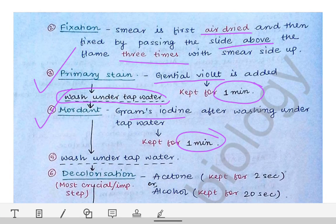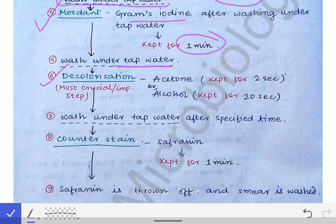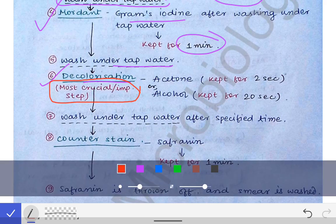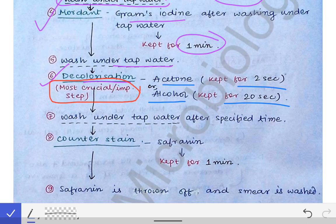After keeping the Gram's iodine for one minute, we wash it again under tap water. Then comes decolorization — the most crucial and most important step of Gram staining. We use acetone or alcohol: if using acetone, keep it for two seconds; if using alcohol, keep it for 20 seconds. After that, wash again under tap water.